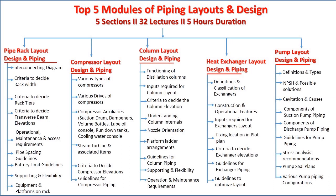The third module is related to columns — layout and piping. We will cover the functioning of distillation columns, how they work, and the various circuits and associated items. Then we look at the various inputs required to start the layout, criteria to decide column elevation, and column internals, which are very important when deciding nozzle orientation — including the various types of nozzles and factors to decide each one.